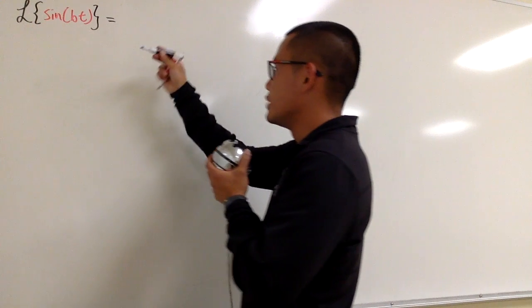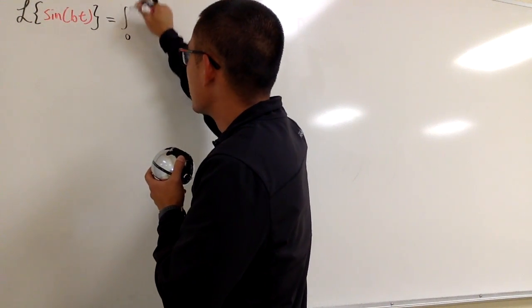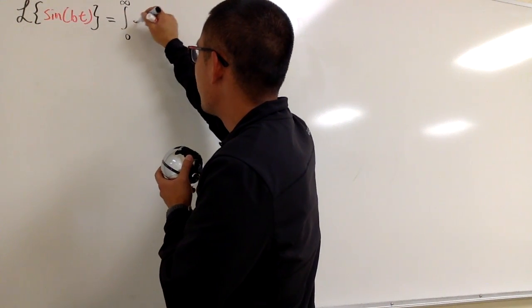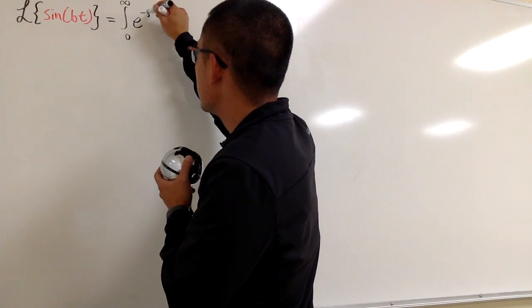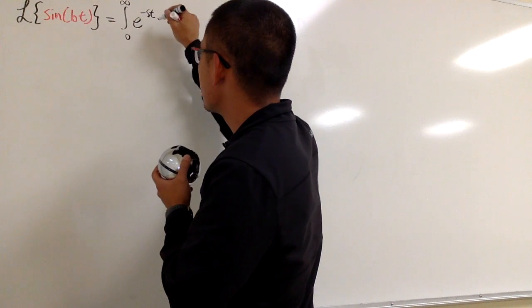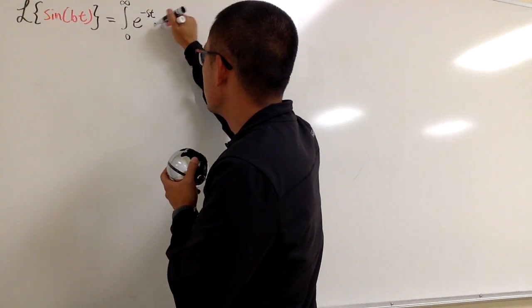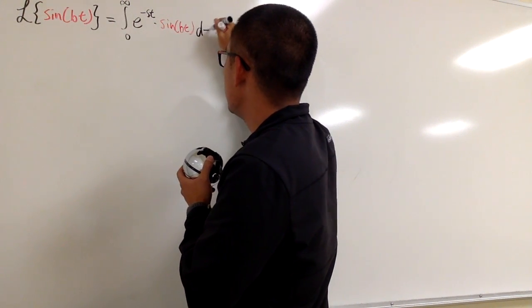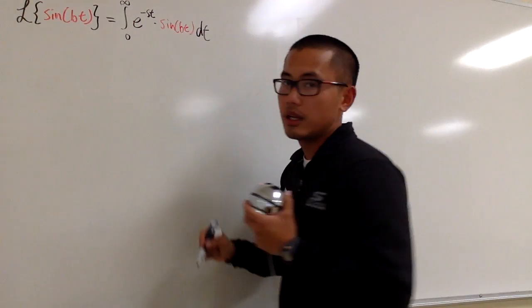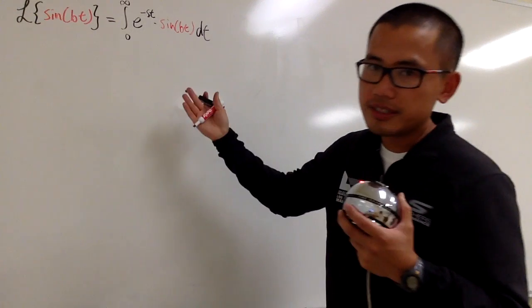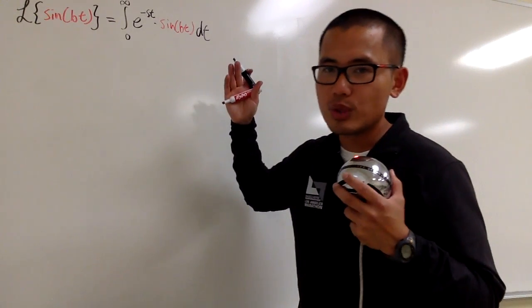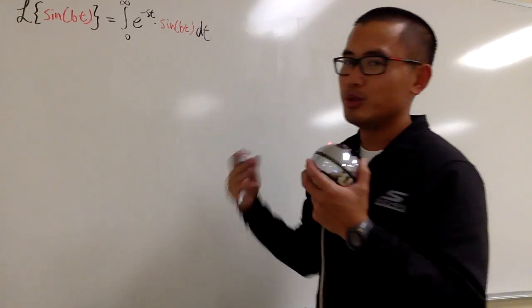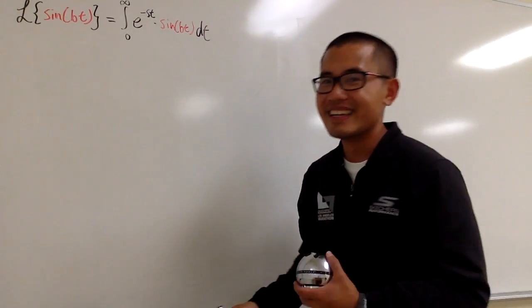We'll use the definition right here, which is going to be the integral from 0 to infinity of e to the negative st times sine bt dt. Now, you know this is hard because we'll use integration by parts, and this is going to be the repeating situation.